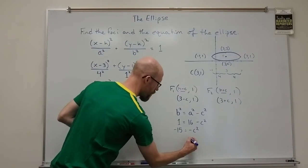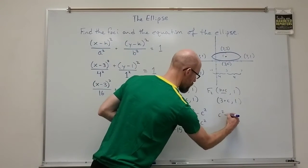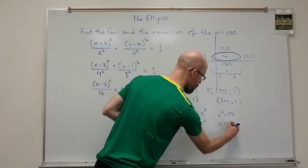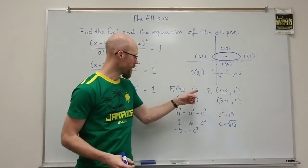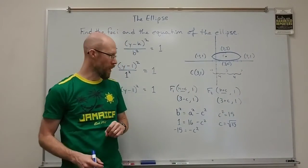Divide out the negative 1. So c squared is 15 which makes c equal to the square root of 15. So that's what we're going to add and subtract from the value of h.